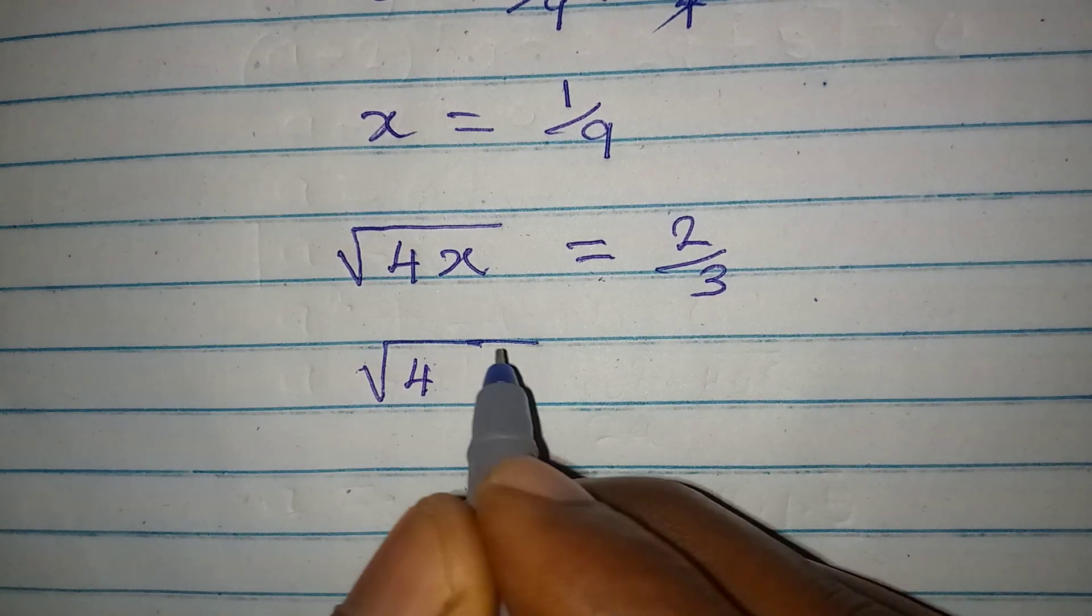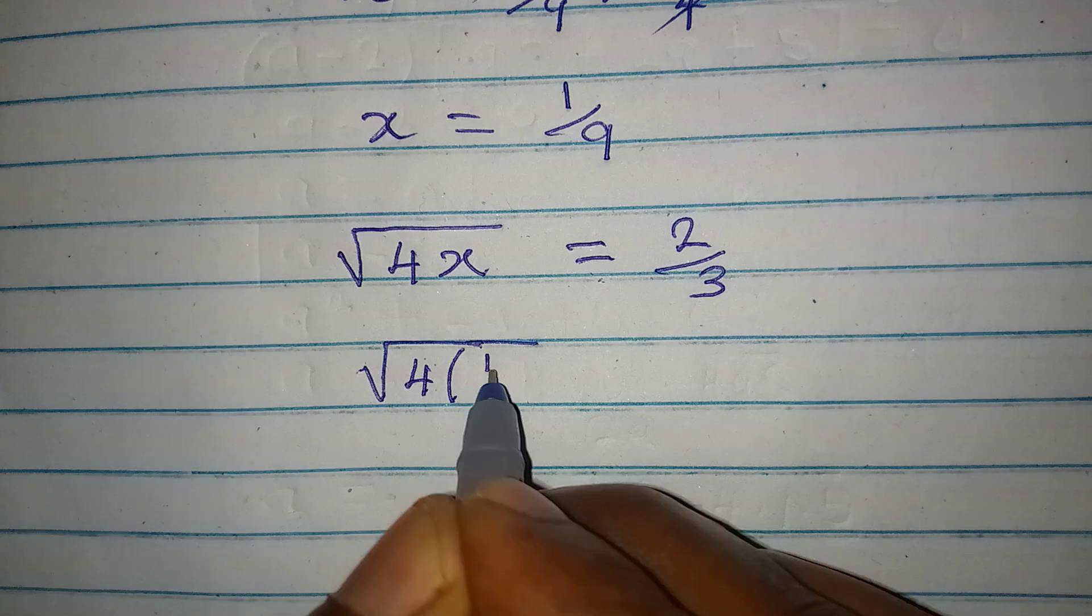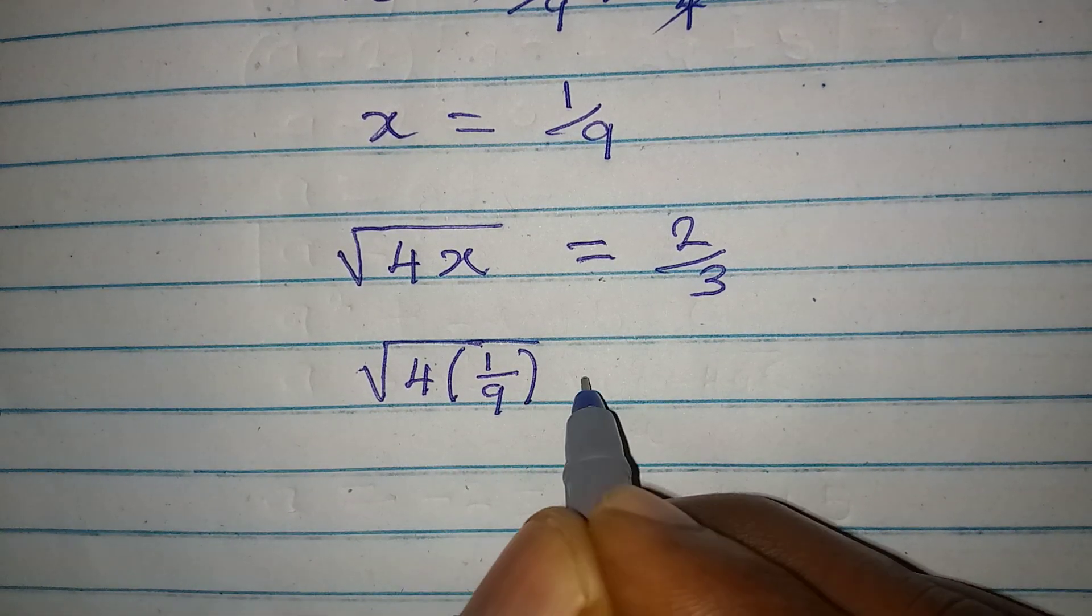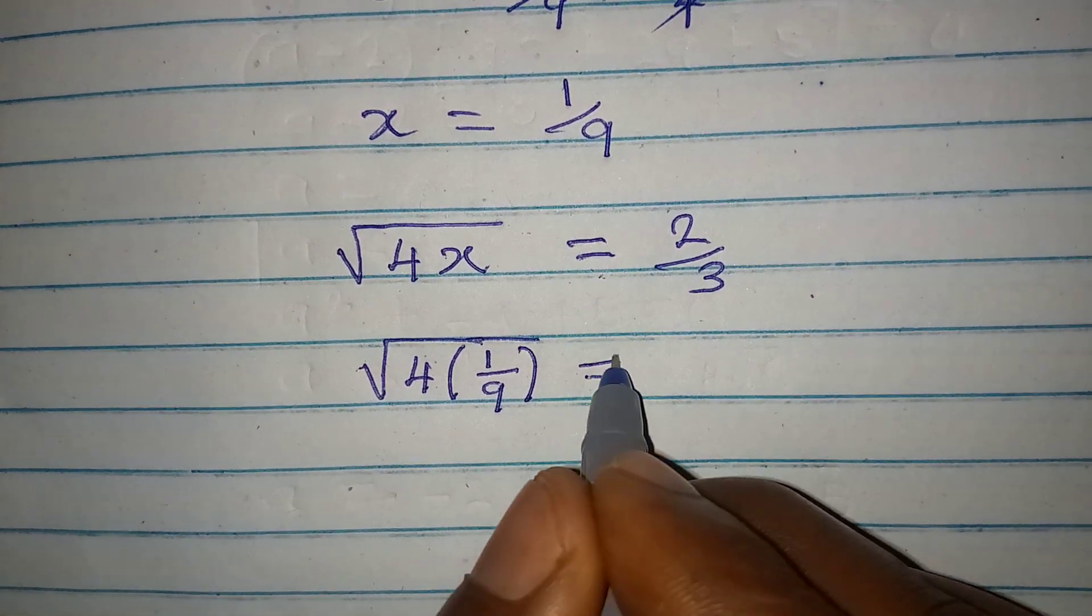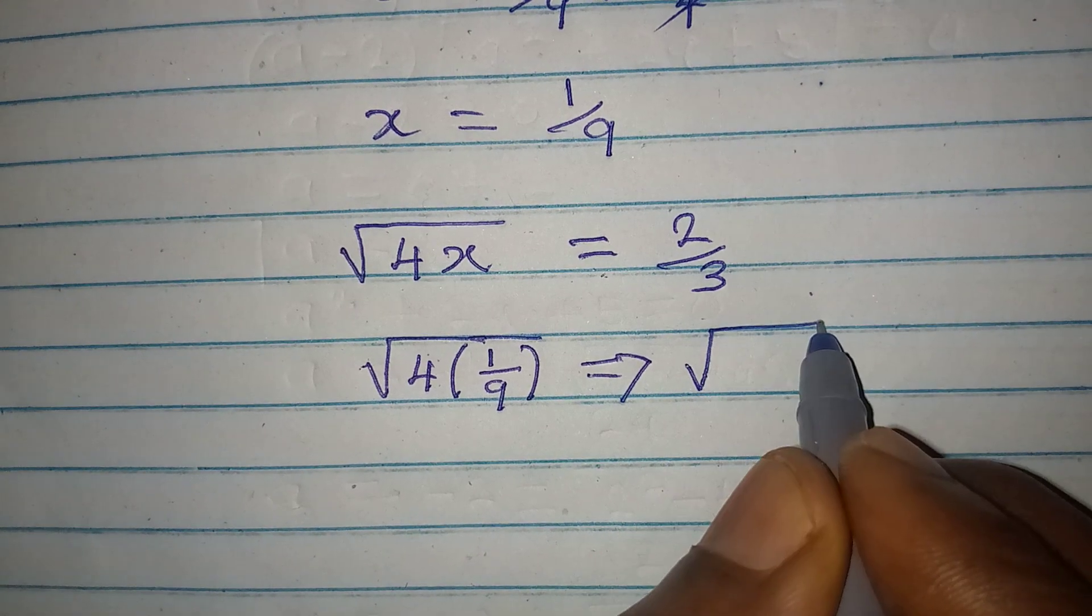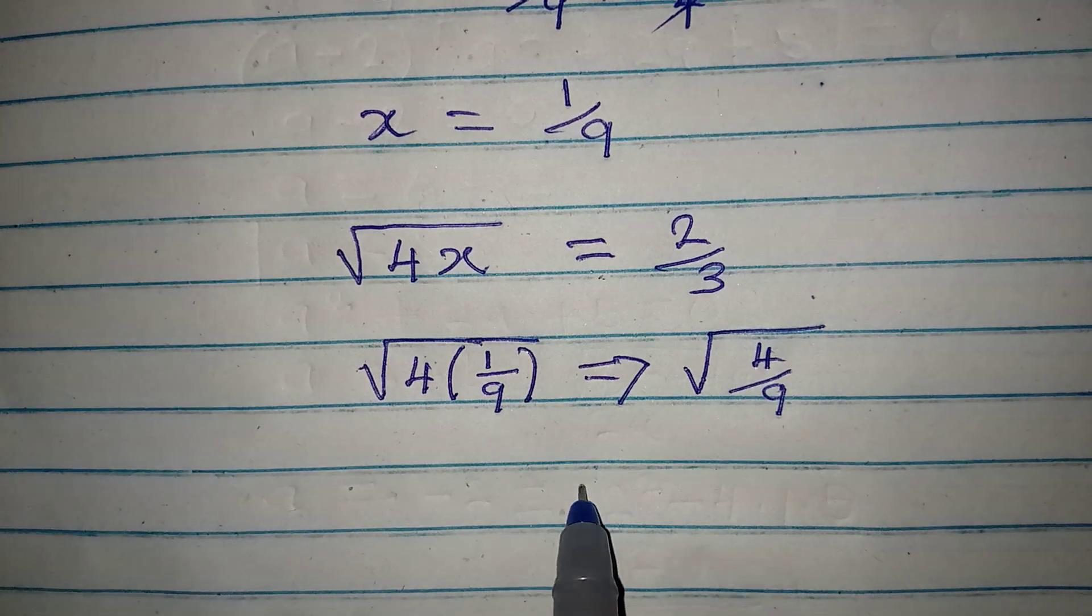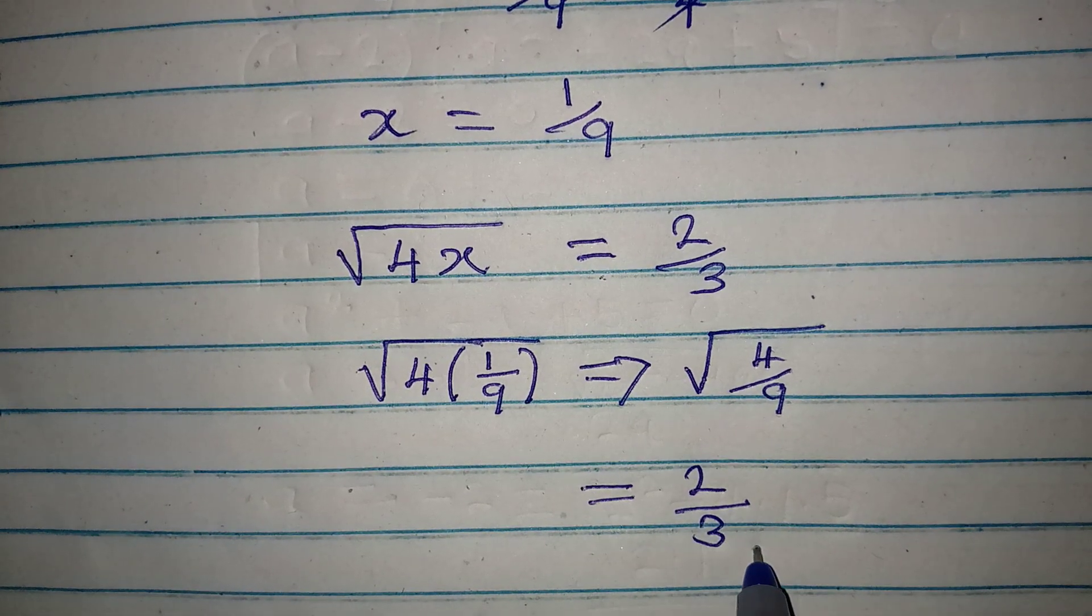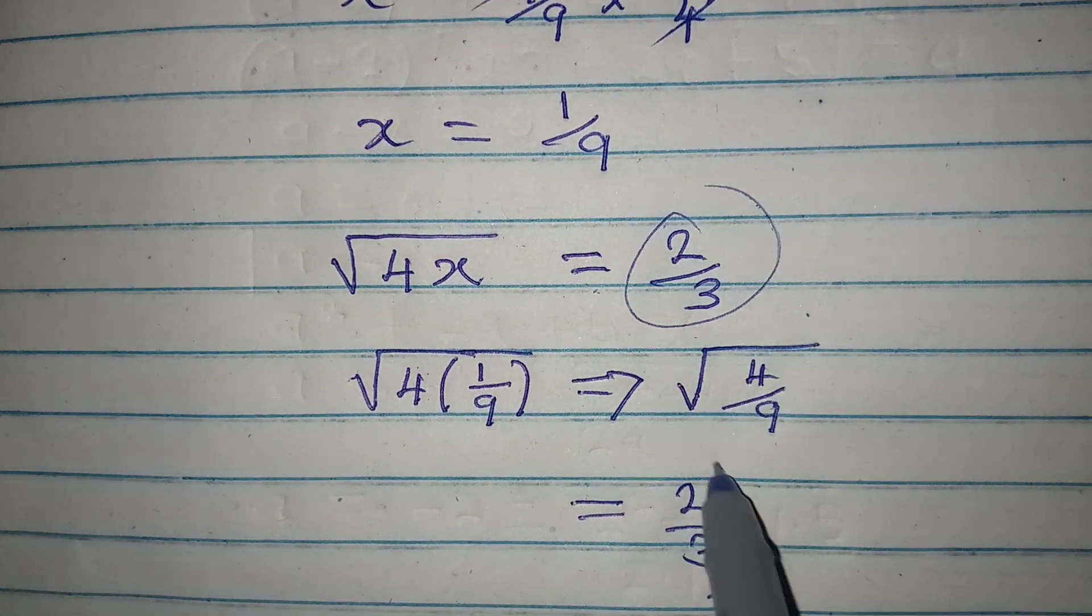Now will this be equal to 2 over 3? Let's process it. Open the inner bracket as we have 4 over 9, and then square root of 4 is 2, square root of 9 is 3. So this confirms that we are very correct to get the value of x as 1 over 9.